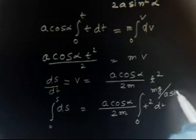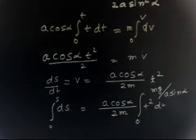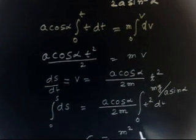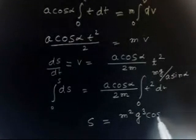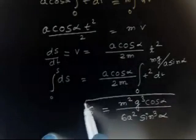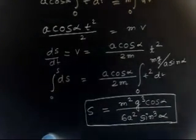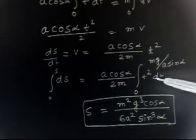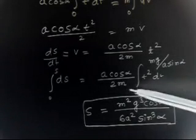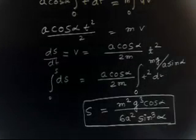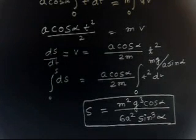Performing the integration: integrating t² gives t³/3, so we get s = A·cos α / (2m) · T₀³/3 = A·cos α · T₀³ / (6m). Substituting T₀ = Mg/(A·sin α) and simplifying — m² comes out, g³ appears — the final distance is S = m²g³·cos α / (6A²·sin³α). The velocity was found as a function of time and then integrated one more time.